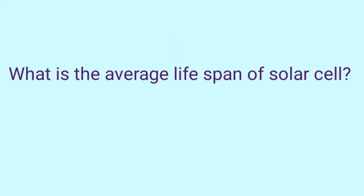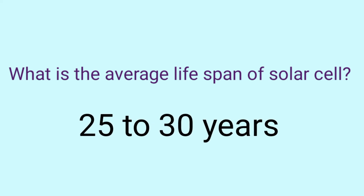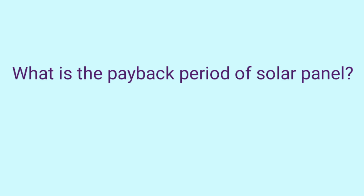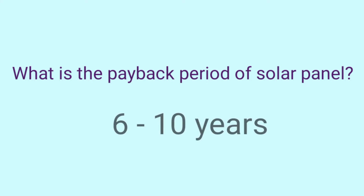What is the average lifespan of solar cell? The average lifespan is around 25 to 30 years. What is the payback period of solar panel? It is approximately 6 to 10 years, and that depends upon the size of plant, cost, solar incentives, and number of units generated.